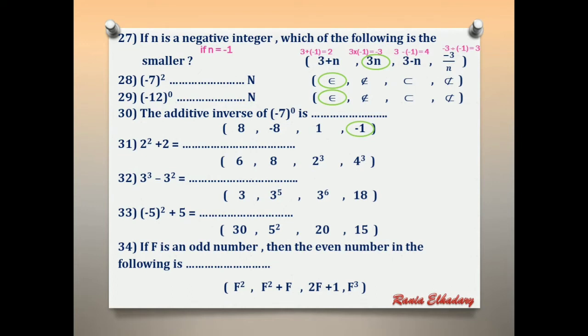Number 31: 2 power 2 plus 2. We have a plus sign, so first calculate 2 power 2 = 4. Then 4 plus 2 equals 6.